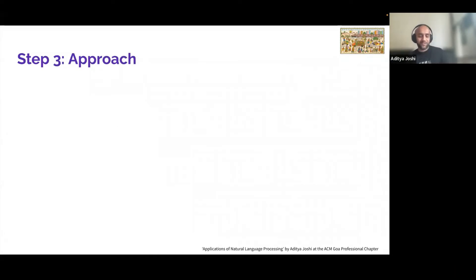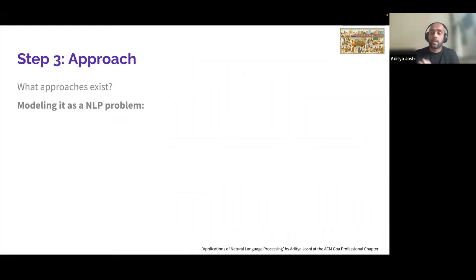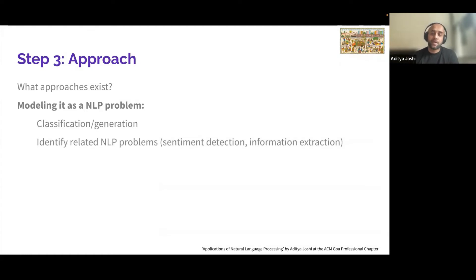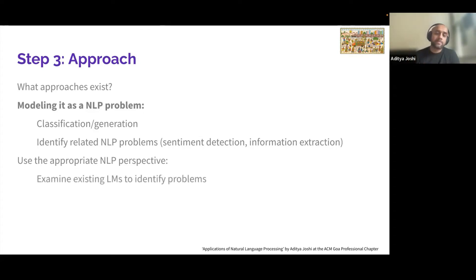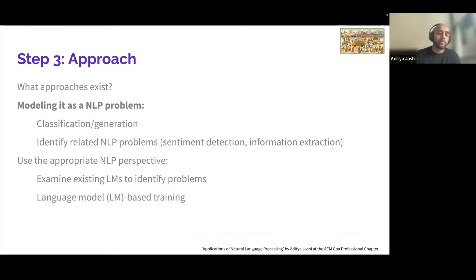Once you have your idea and dataset, the third step is the approach: model it as an NLP problem. You could model your idea as a classification or generation problem, or identify other related NLP problems. In terms of NLP application papers, there are two kinds of approaches: you could either examine existing language models to identify problems, or you could train your own model based on a language model.